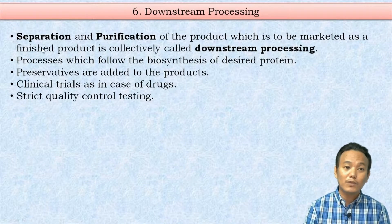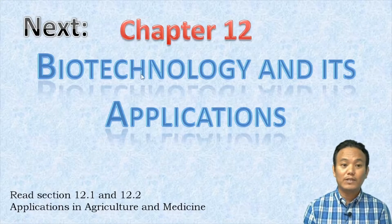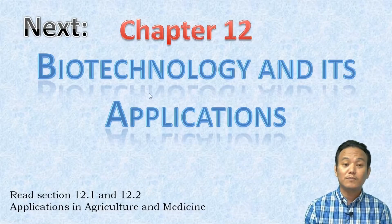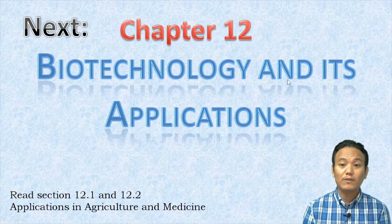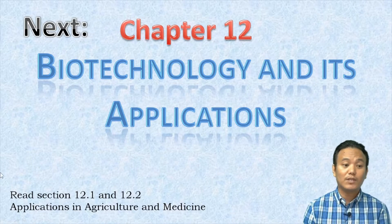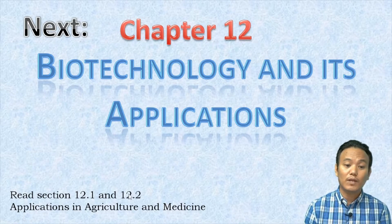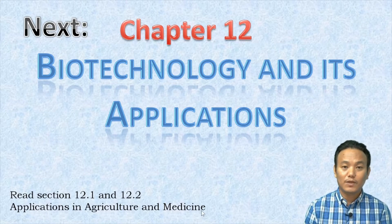Separation and purification are collectively called downstream processing. With this we have finished Chapter 11 — Biotechnology: Its Principles and Processes. Next we will start Chapter 12 — Biotechnology and Its Applications. Before watching the next video, please read sections 12.1 and 12.2, which cover applications of biotechnology in agriculture and medicine.